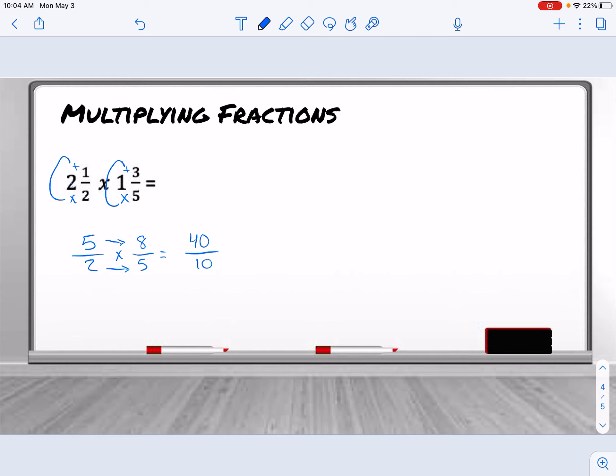And then we can reduce this. 40 divided by 10 is 4. So 2 and a half times 1 and 3 fifths equals 4. So remember, we make them improper and then we can multiply straight across.